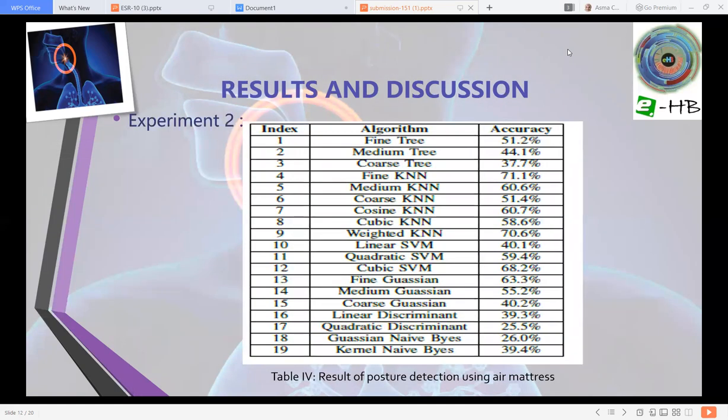In experiment number two, the results of the posture detection using air metrics shows these accuracies. From the table, we can realize that the accuracy of these algorithms with the air metrics is much lesser than the one in experiment number one. This shows that the metrics also matter in finding and detecting the posture for the subjects.